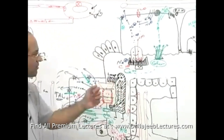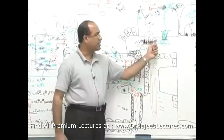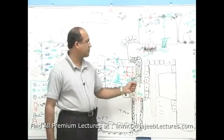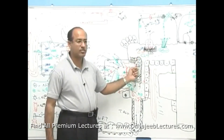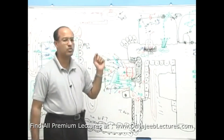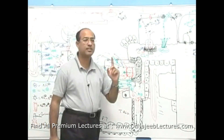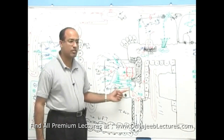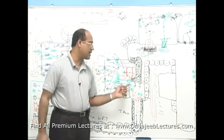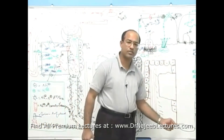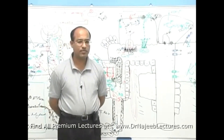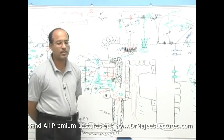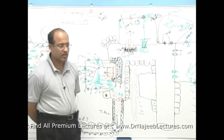Now let's compare thiazide and furosemide with respect to calcium. Both are natriuretic and kaliuretic drugs, but they affect calcium in opposite ways. Furosemide prevents calcium reabsorption from the paracellular route of the thick ascending limb of the loop of Henle, resulting in excessive calcium loss. So furosemide is a calcium-wasting diuretic — that is why furosemide can sometimes be used along with normal saline for handling acute hypercalcemic states.